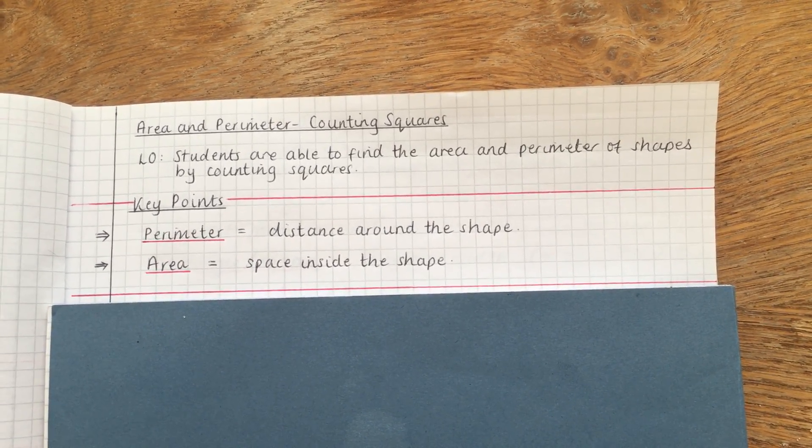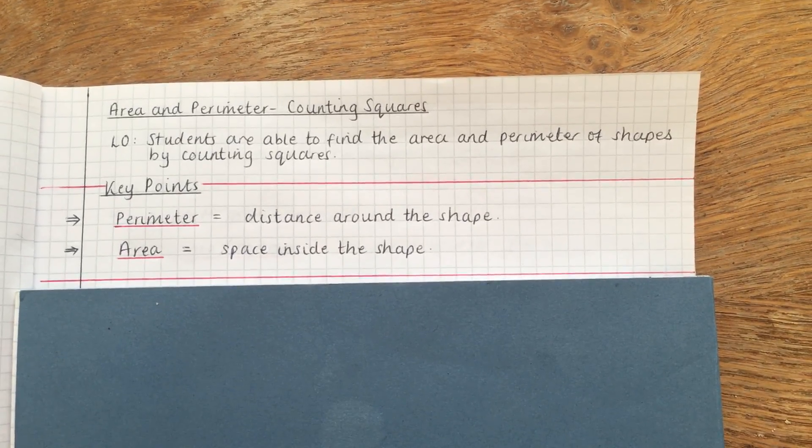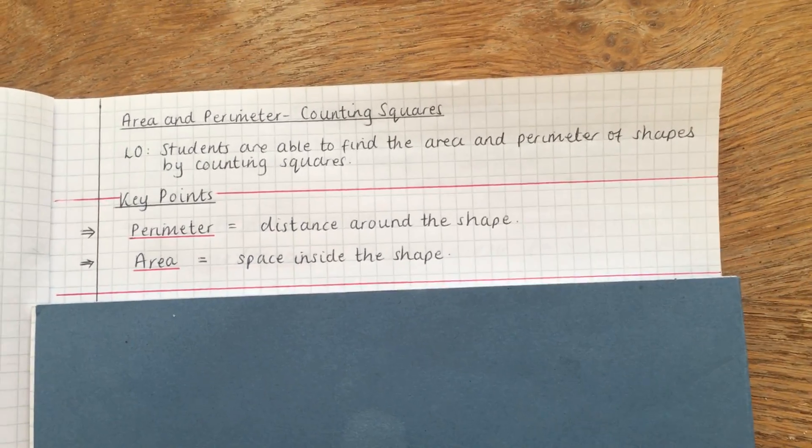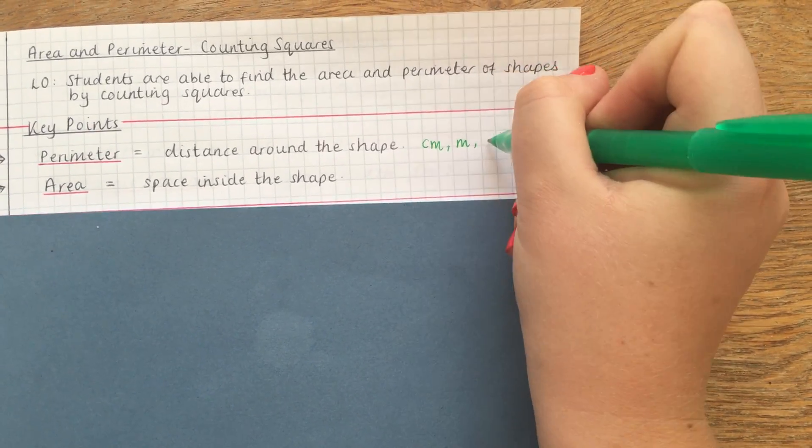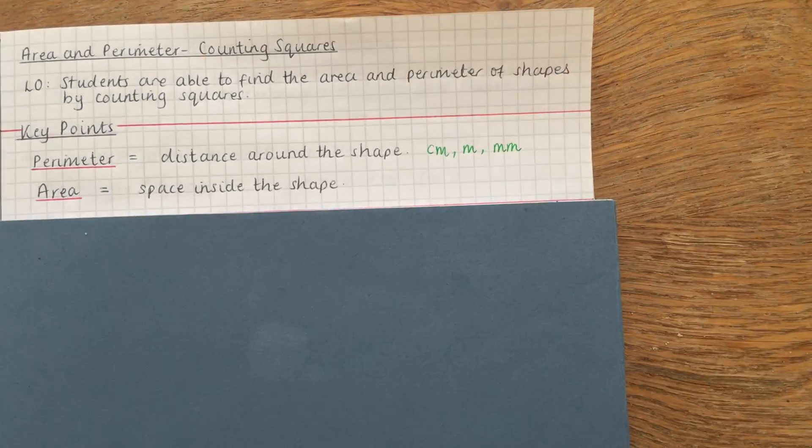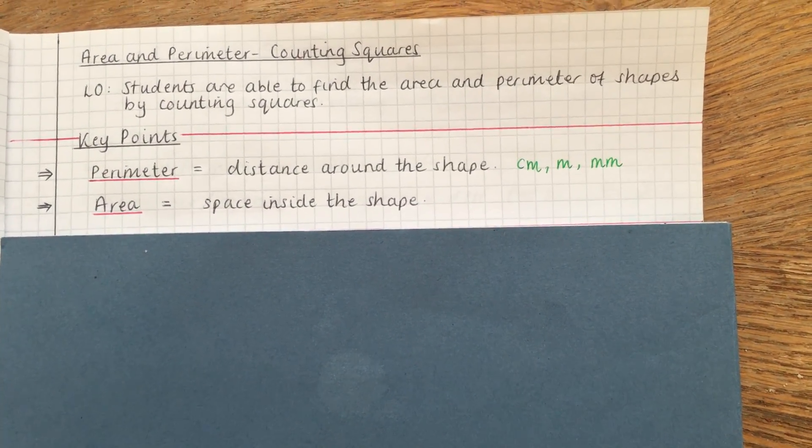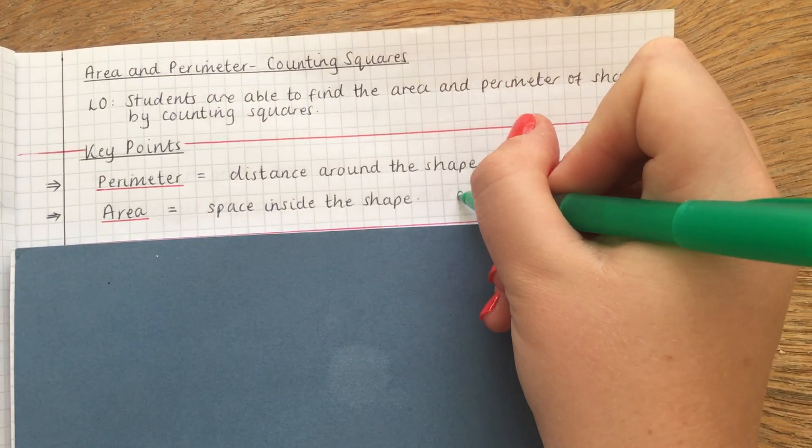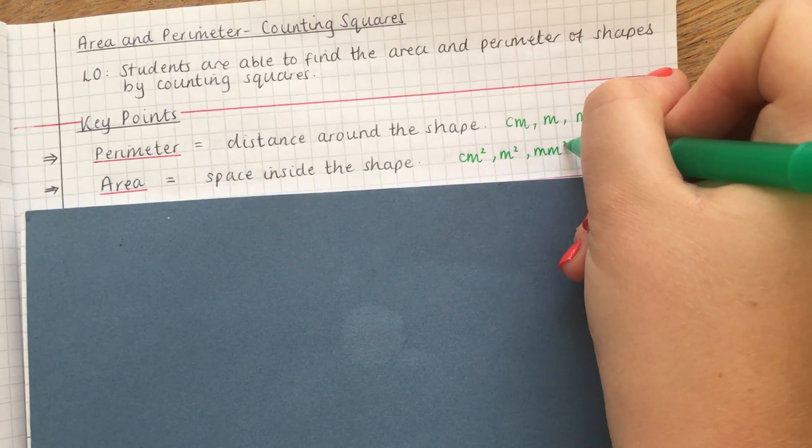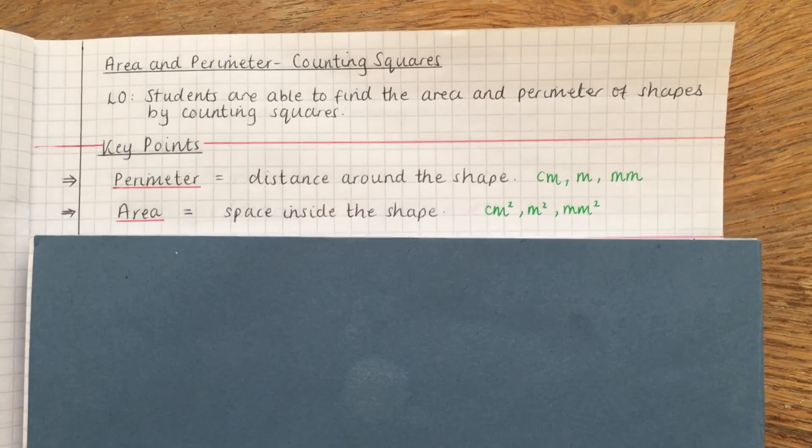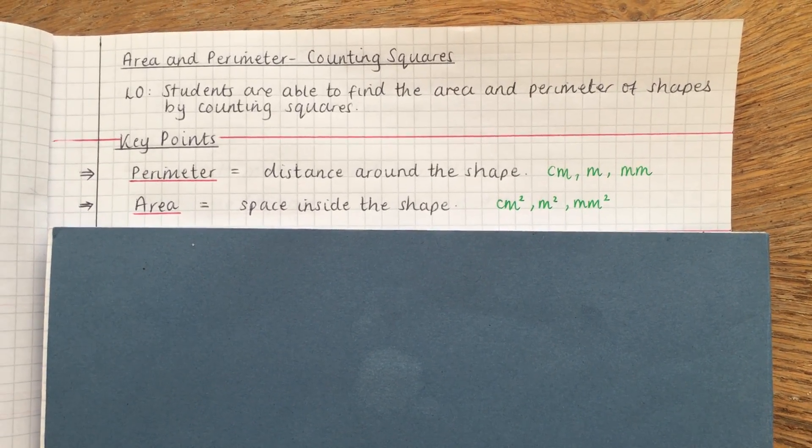So before we start, just to remind you that the perimeter of a shape is the distance around the outside. Usually the units for this are in centimeters or meters or millimeters. The area is the space inside the shape and the units for this are usually centimeters squared or meters squared or millimeters squared. You need to remember those units because sometimes in exam questions you have to write the units down yourself and they're worth one mark.